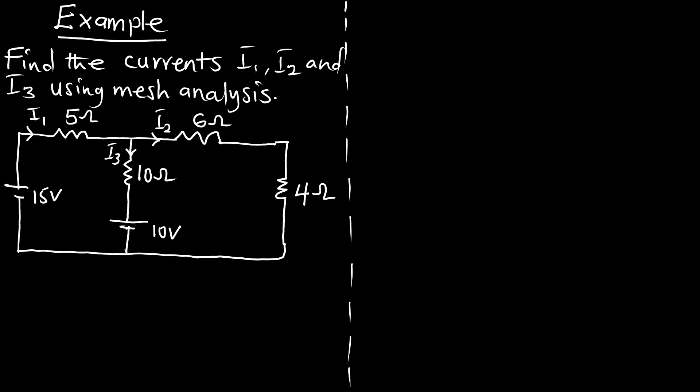We are to use mesh analysis and we have our circuit, so we can see the various resistors. We have two power sources — the 15 volt and the 10 volt. We are going to calculate the currents I1, I2, and I3 using mesh analysis. In mesh analysis we have to consider each mesh and introduce our mesh current.